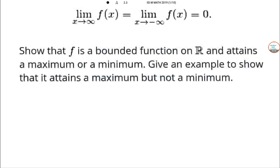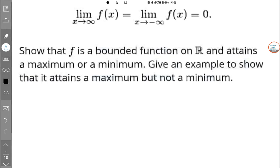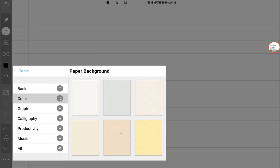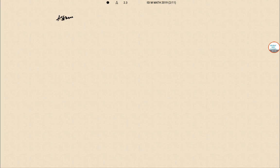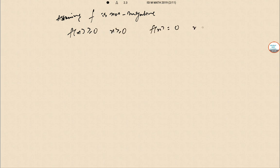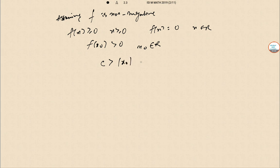This question is on real analysis. So if we assume that f is non-negative, that is f(x) ≥ 0. If f(x) = 0 for all x in R, then obviously f is bounded and attains its maximum or minimum at each point. So let f(x₀) > 0 for some x₀ in R. By assumption there exists c > x₀ such that for all x > c and for all x < −c, we have 0 ≤ f(x) < f(x₀).